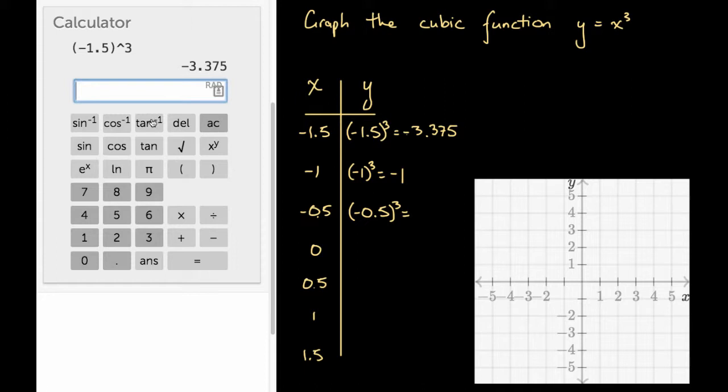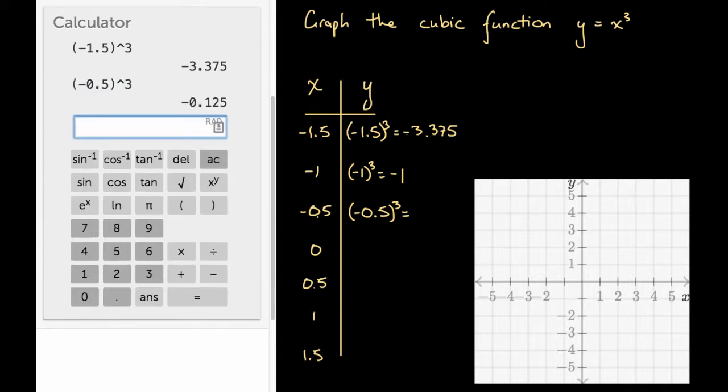We could easily type rather than pressing each one of those buttons, which is what I'll do now. So minus 0.5, and that's going to be cubed. That's going to be equal to minus 0.125.